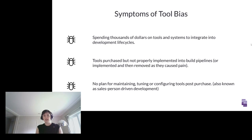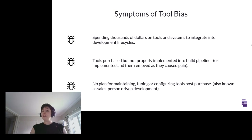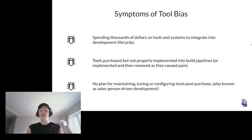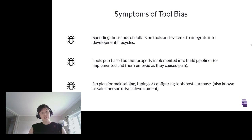Self-assessment for tool bias: Are you spending thousands of dollars on tools and systems? Not every tool needs to cost a lot — there are amazing free and open-source tools available. Do you have tools purchased but not properly implemented into your build pipeline — maybe installed then removed because they caused pain, or left in learning mode but never fully configured? That's a tool bias: you spent time and focus because the tool will solve the problem, but you got halfway there and stopped.